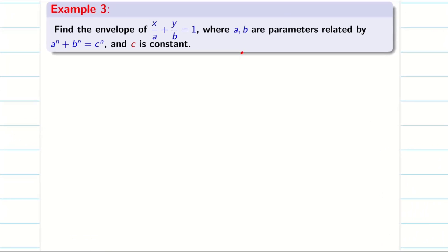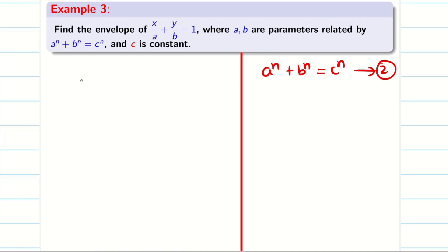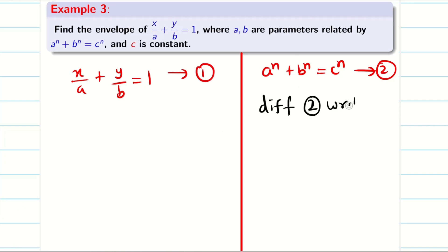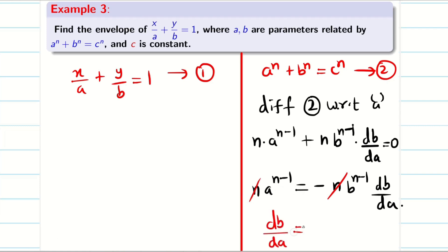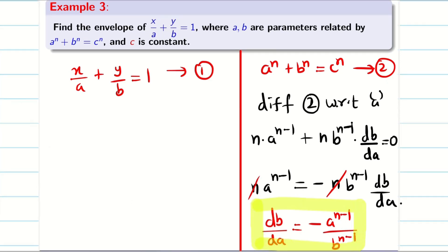The next question is the generalized version of example 1. Here the parameters satisfy the condition aⁿ + bⁿ = cⁿ — that is the only difference; previously we had a + b = c. Considering b as a function of a and differentiating equation 2 with respect to a: n·a^(n−1) + n·b^(n−1)·(db/da) = 0. Cancelling n, we get db/da = −a^(n−1) / b^(n−1).